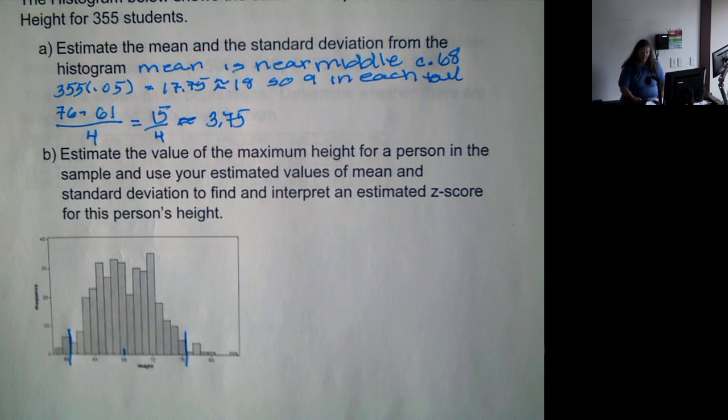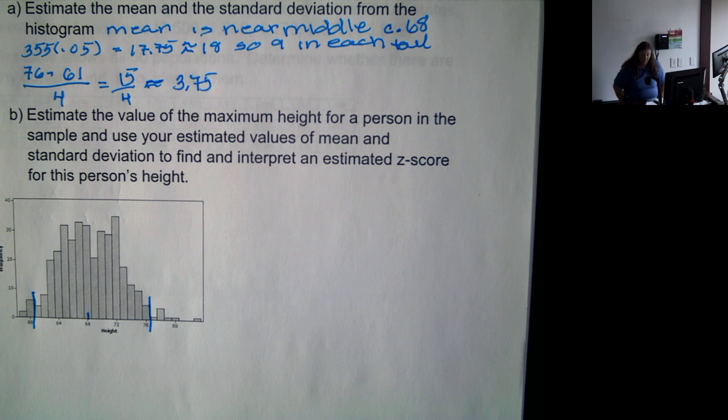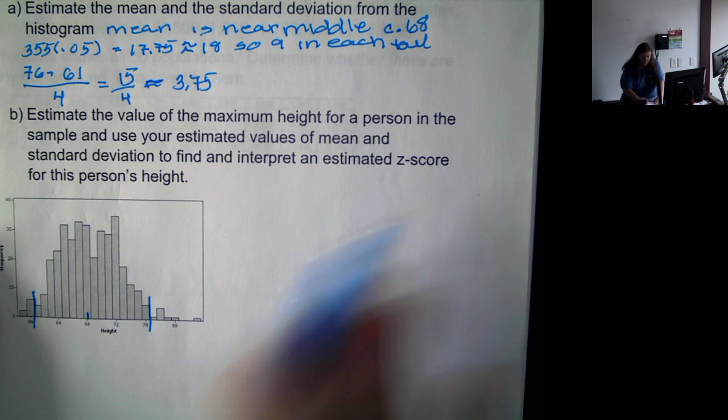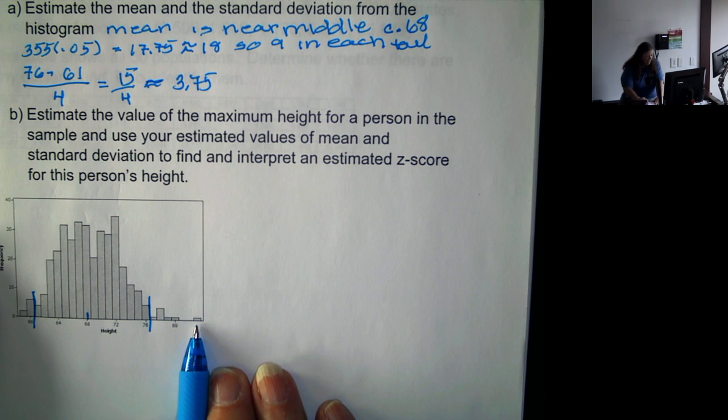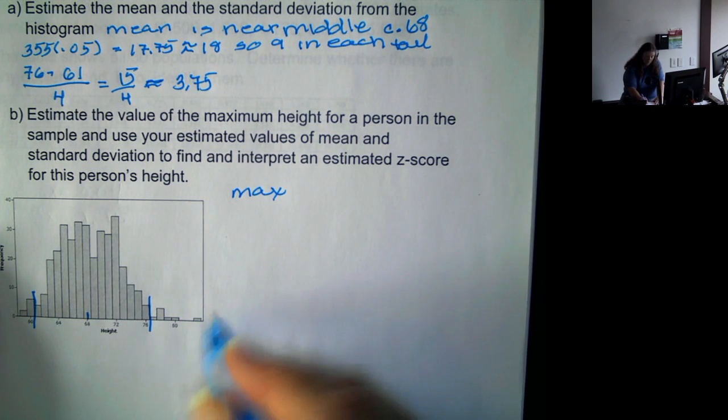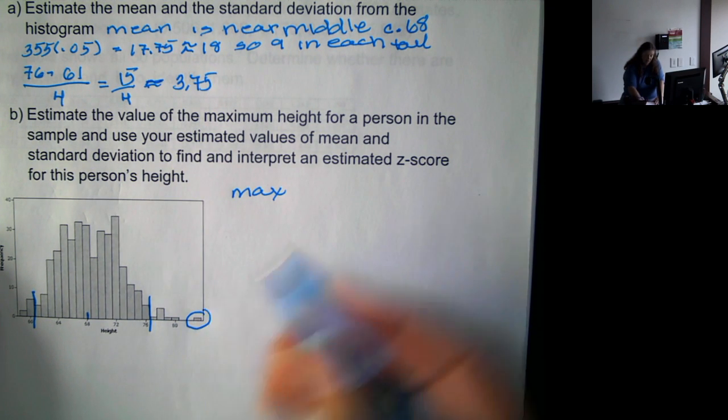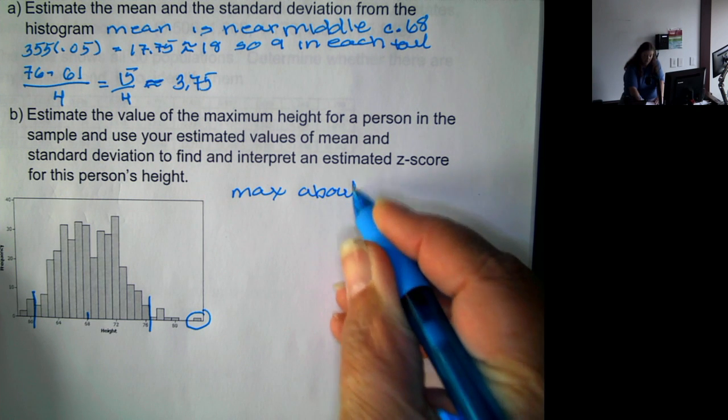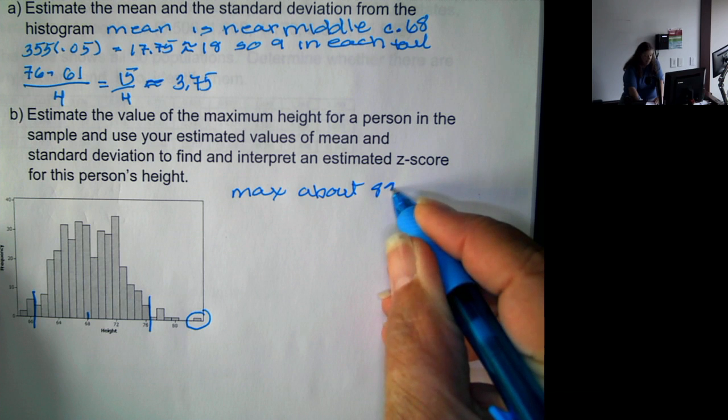Now we want to estimate the value of the maximum height for a person in the sample. And using the estimated values of mean and standard deviation, find and interpret a z-score for this person's height. Well, it appears that the max, that would be this student right here, is about 83.